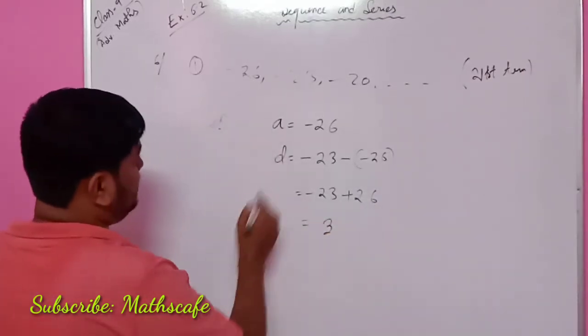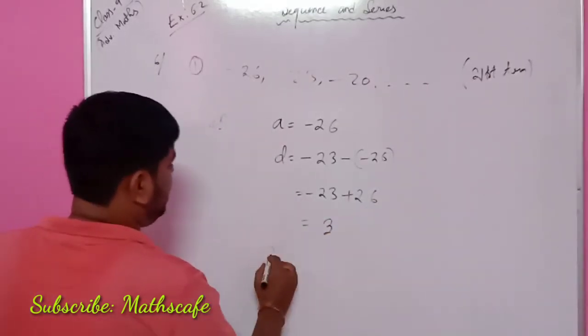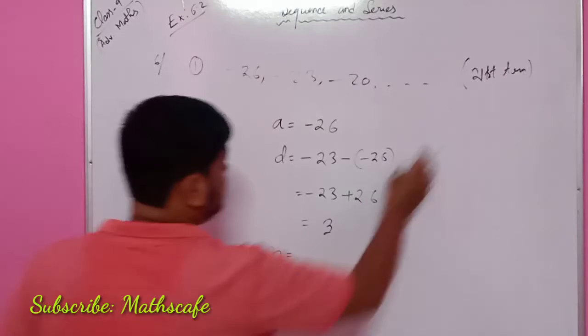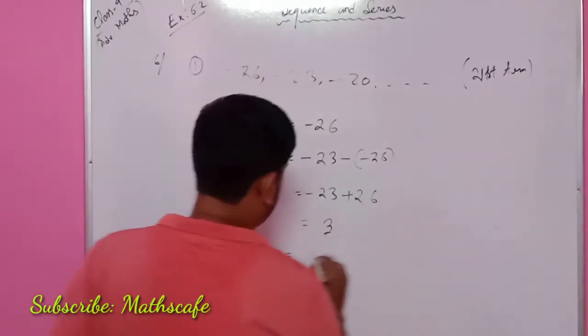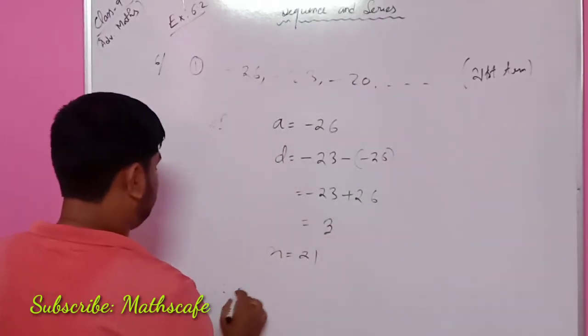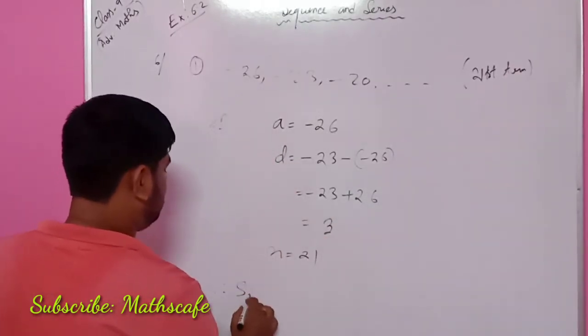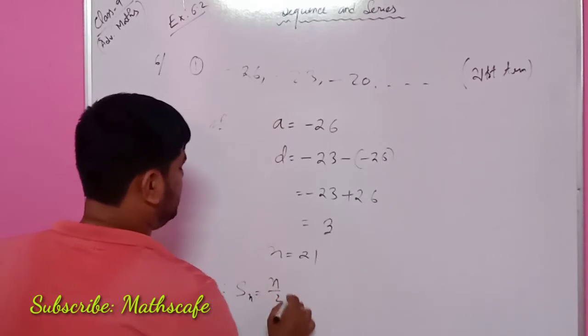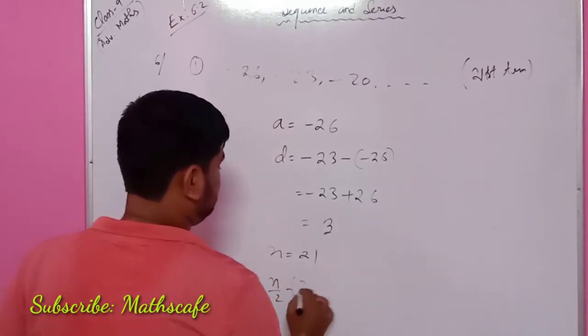Minus 23 minus minus 26 equals 3. I will say that n equals the number of terms — 21 terms. Therefore, S of n. I will say that n by 2.